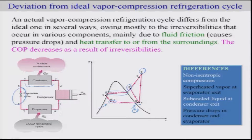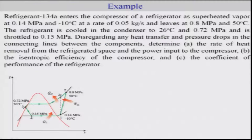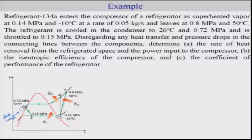When solving problems we may consider some idealizations and some non-idealizations. Here is an example of a vapor compression refrigeration cycle where the refrigerant is slightly superheated at the compressor inlet. The entropy increases through the compressor, so the process is not isentropic due to irreversibility. At the condenser exit, the refrigerant is slightly sub-cooled — not at saturated liquid condition — and the compressor is not isentropic.